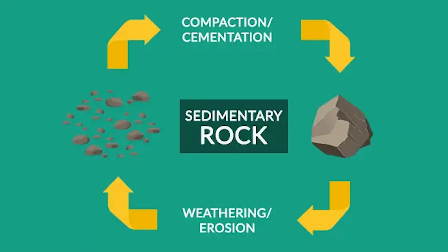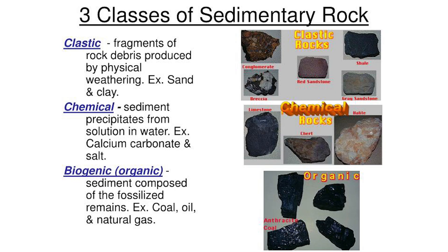To recap: sedimentary rocks form through weathering, erosion, transportation, deposition, compaction, and cementation. There are three main types — clastic, chemical, and organic — and they help us understand both the Earth's past and its present resources.